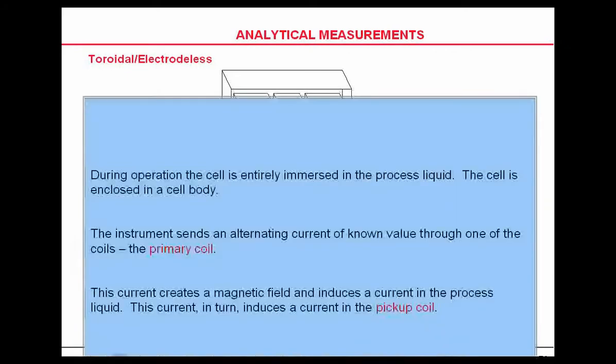This is what's called electrodeless conductivity. During operation, the cell is immersed entirely in the process liquid. The instrument sends an alternating current of known value through one of the coils — the primary toroid. This current creates a magnetic field and induces a current in the process liquid, which in turn induces the current in the pickup coil.